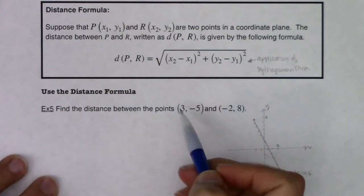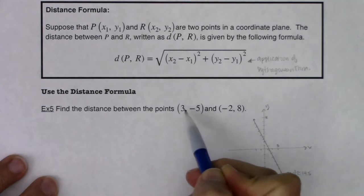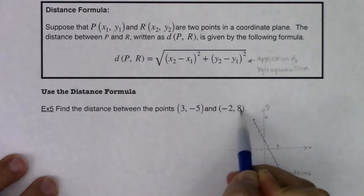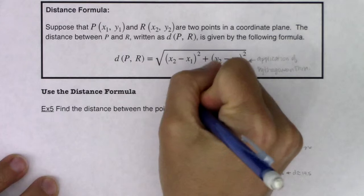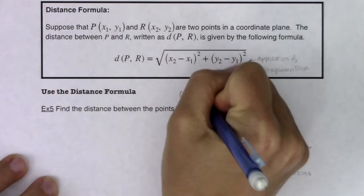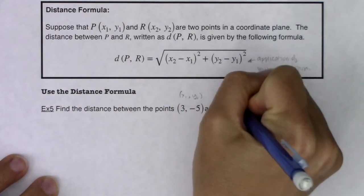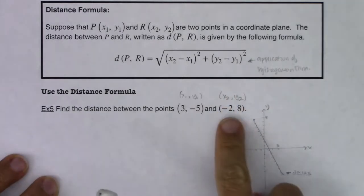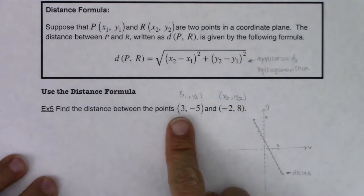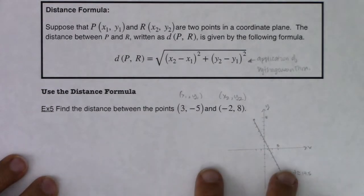Alright, so let's use the distance formula. Now, it doesn't matter which of these you call x1y1 or x2y2. So you can call this one x1y1 and this one x2y2, or you could flip-flop it. You could call this one x1y1 and this one x2y2.